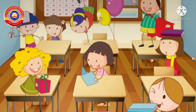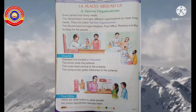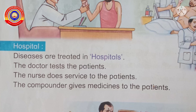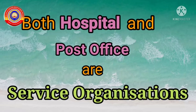Hello, my dear children. Welcome to our today's EVS class. In our last class we started our 14th chapter, Places Around Us. We discussed about the service organizations part of the chapter. We discussed about hospital and post office — these two are service organizations.